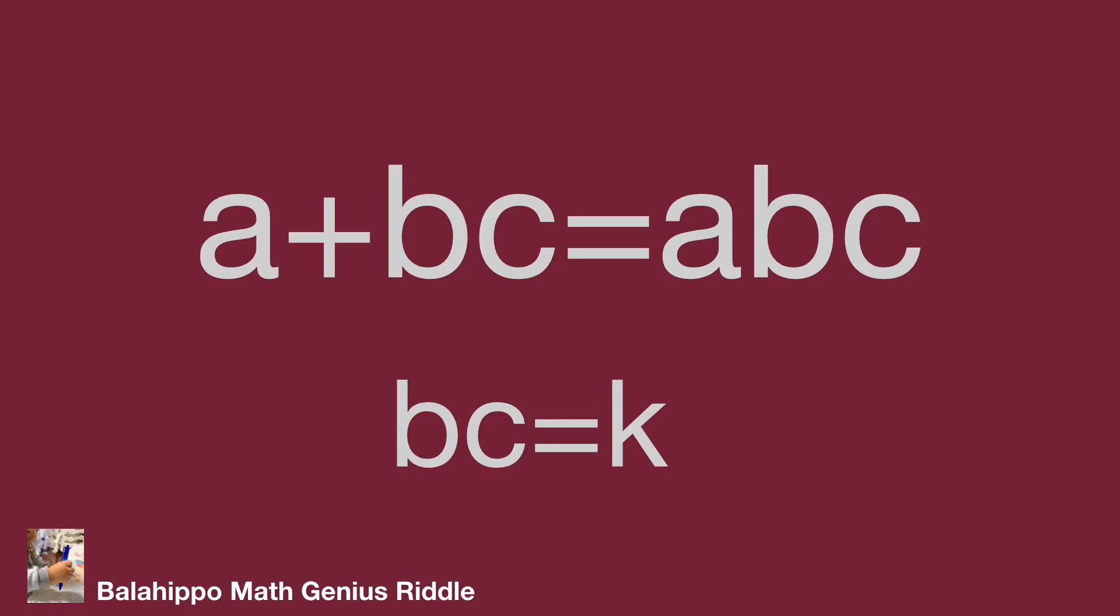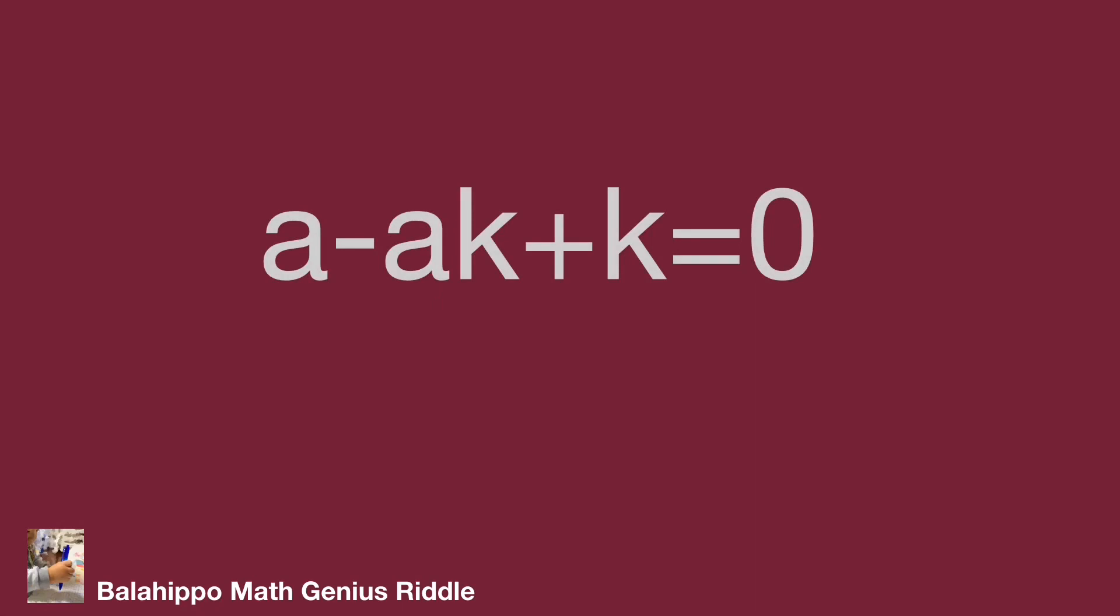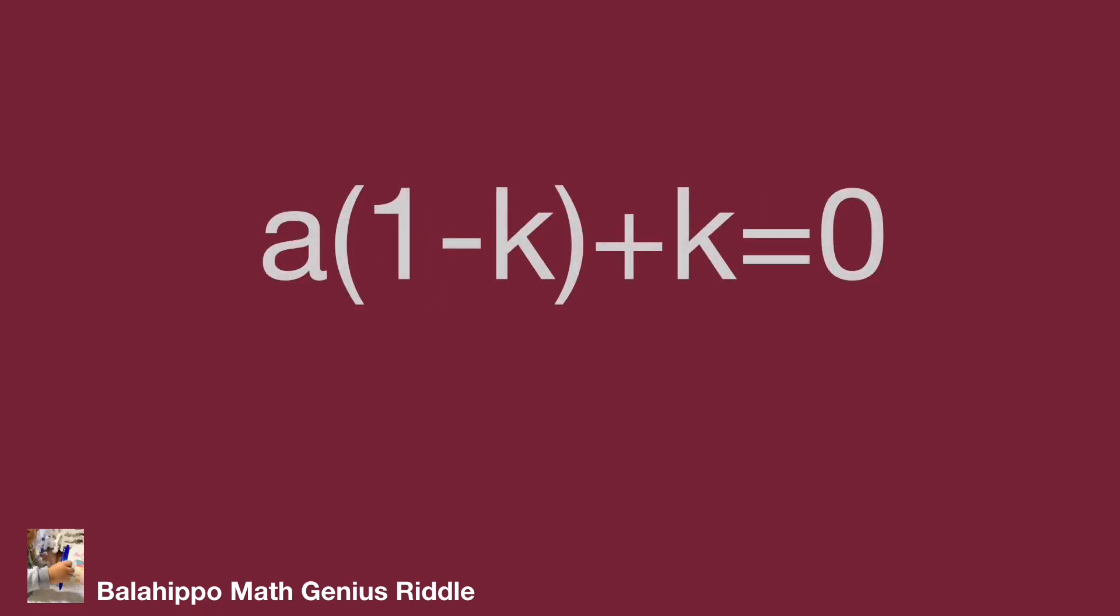Substitute BC by K in the given information. So the new equation is A plus K equals AK. It's easier for further operations. Move all the items to the same side of the equation. In this case, factorize as A times (1 minus K) plus K equals zero.